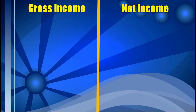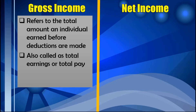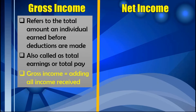Let us first differentiate gross income from net income. Gross income refers to the total amount an individual earned before deductions are made. It is also called total earnings or total pay. When we are talking about total earnings, it can be in the form of salary or wage. The gross income is computed by adding all the income received.